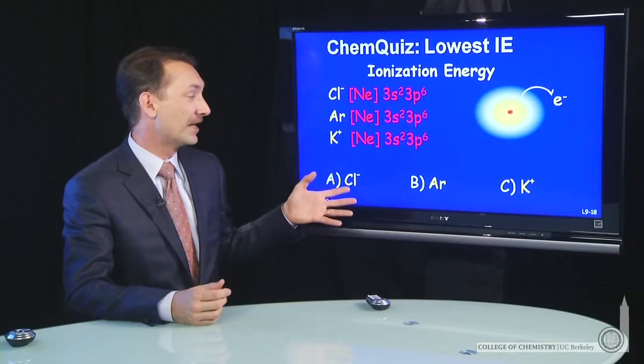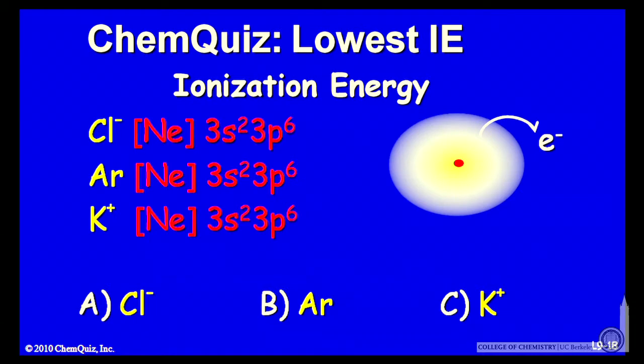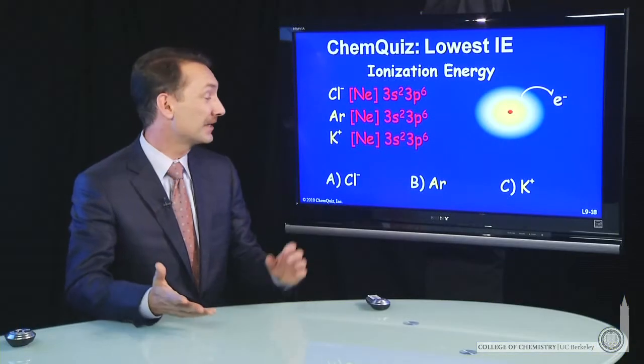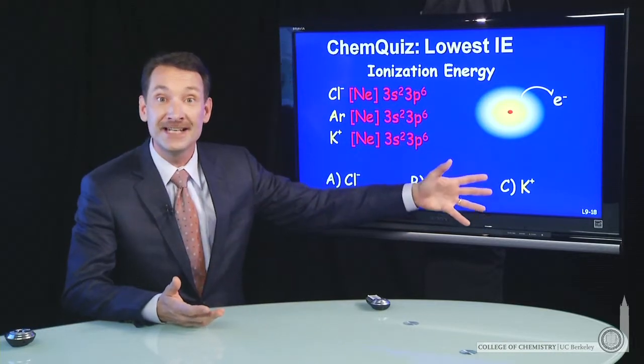We're looking at three species, Cl minus, argon, and potassium plus, trying to determine which will have the lowest ionization energy. Now, interestingly, these three all have 18 electrons.